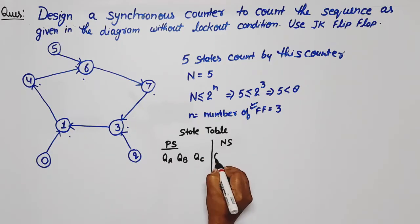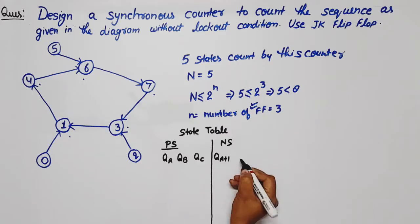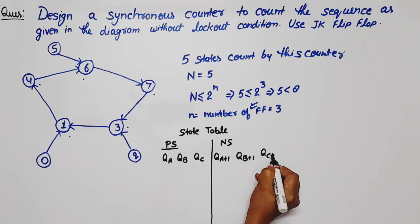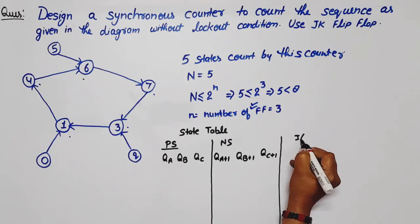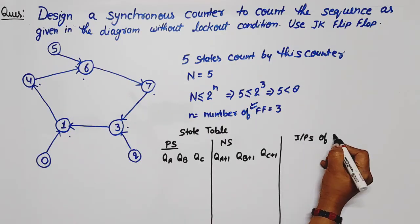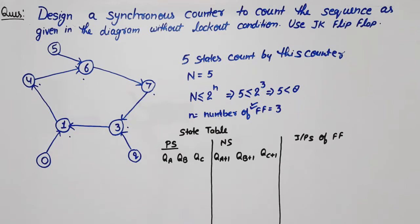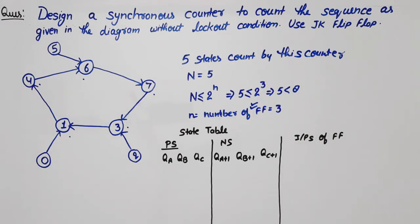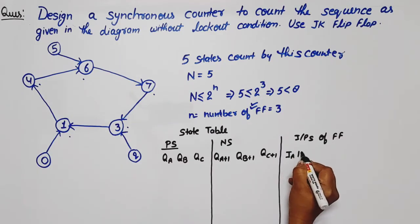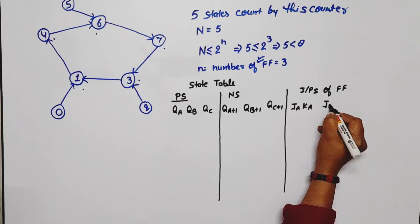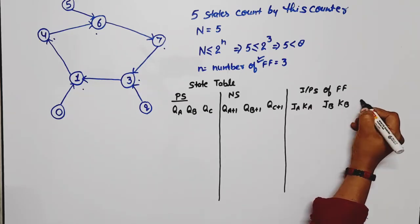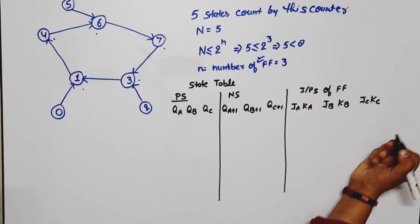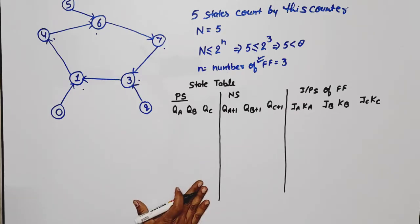Next, we define the state columns: next state of QB is QB plus 1, next state of QC is QC plus 1. We need inputs for the JK flip-flop. For flip-flop A: JA and KA; for B: JB and KB; for C: JC and KC.